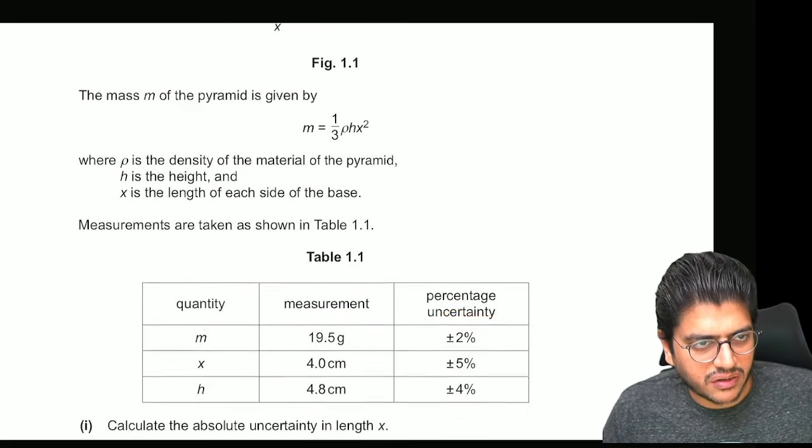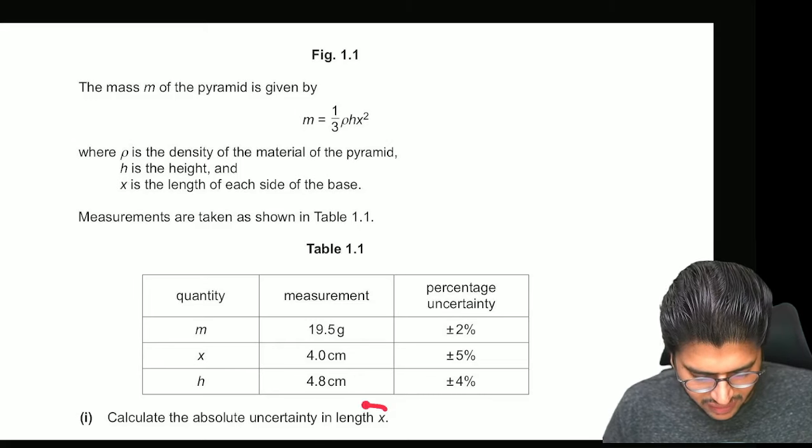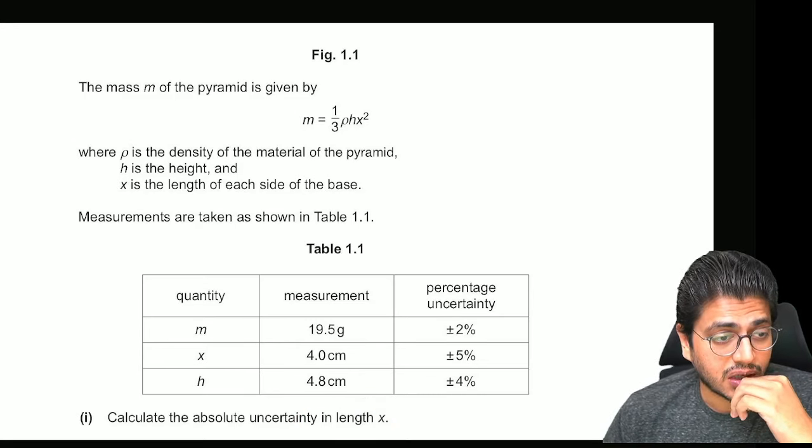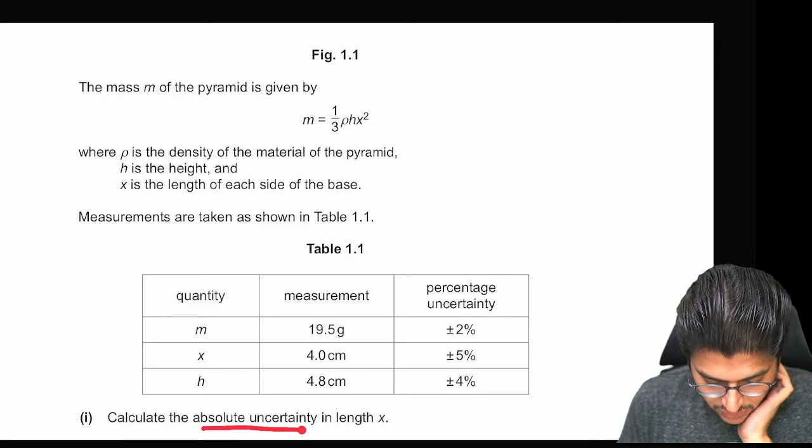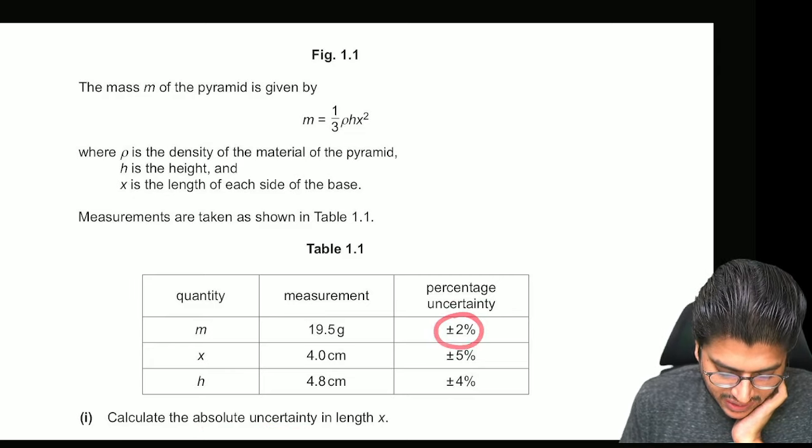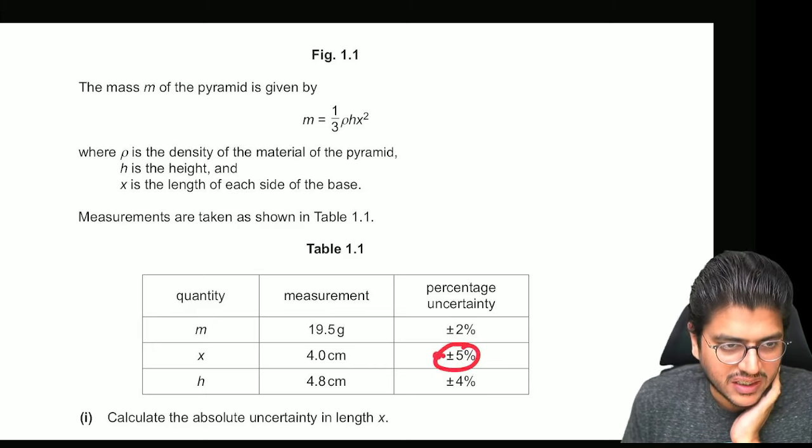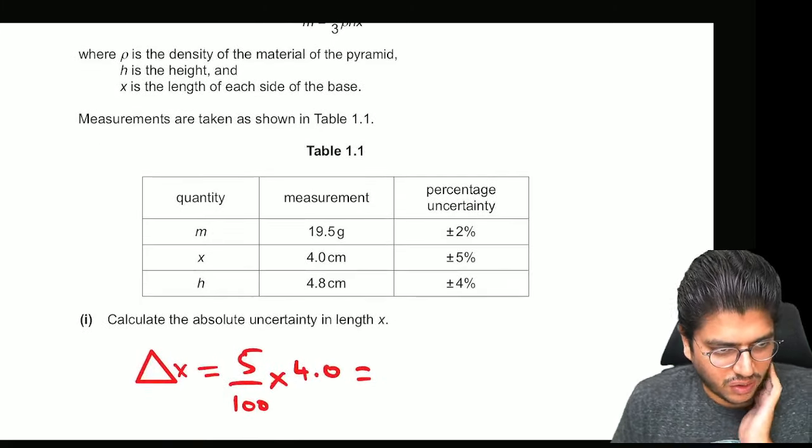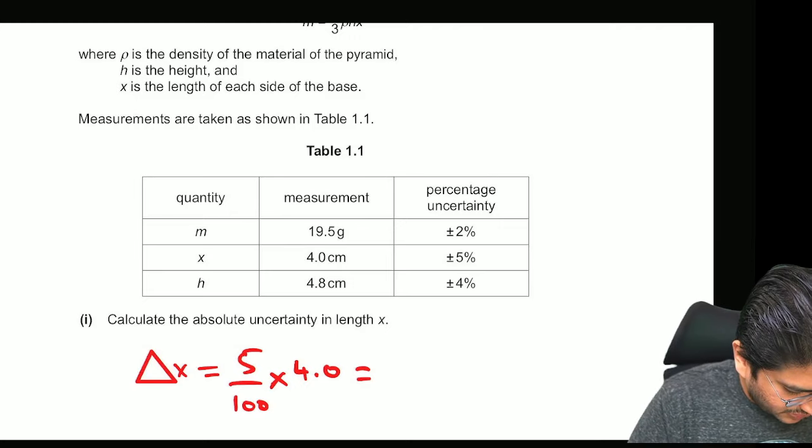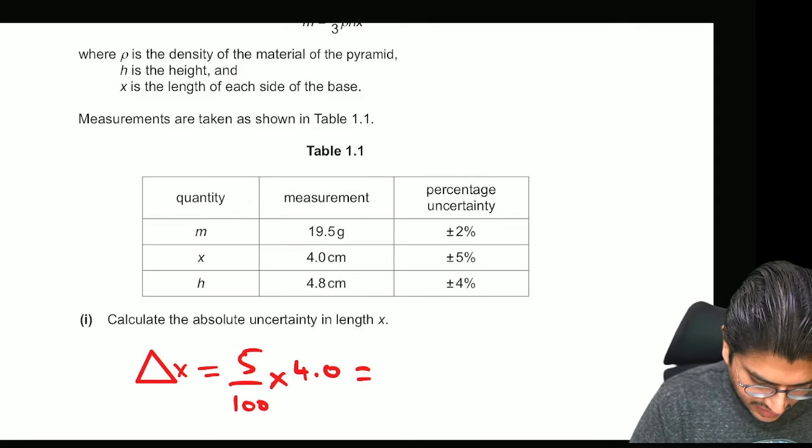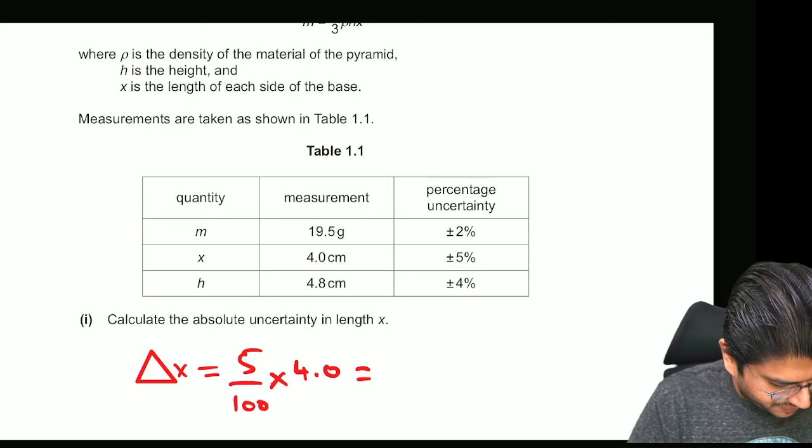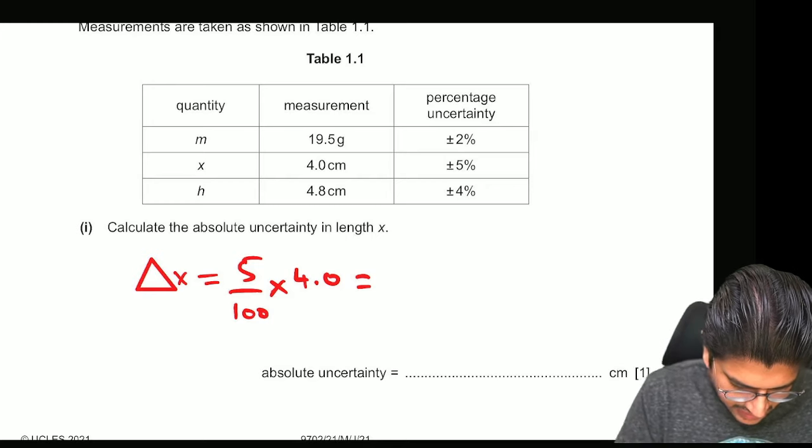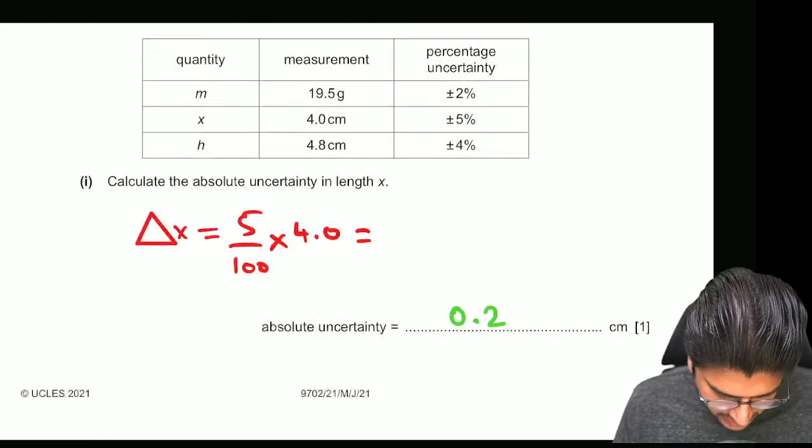And the first question again is the absolute uncertainty in length X. I just told you this. That if you want to calculate the absolute uncertainty, it is always your percentage error, which is 5% times the actual value. That will give you the absolute uncertainty. So 5% of 4, let's do it, and that gives you 0.2. So 0.2 is the answer. Let me write that down here.